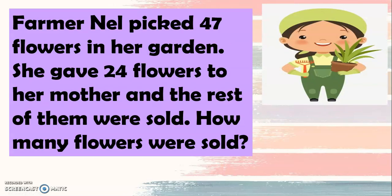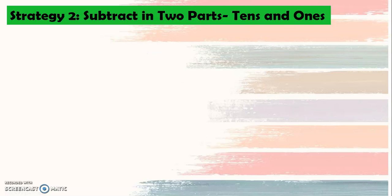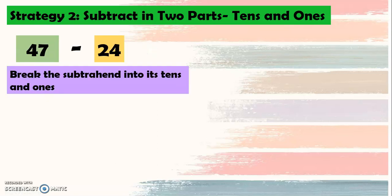Another one. Farmer Nell picked 47 flowers in her garden. She gave 24 flowers to her mother, and the rest of them were sold. How many flowers were sold? Now again, strategy two. Let's subtract in two parts with tens and ones. So 47 minus 24. Let us break the subtraction into its tens and ones. So we have 47 minus 20, which is in the tens, and minus 4, which is in the ones.